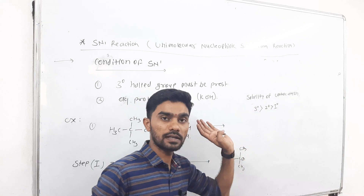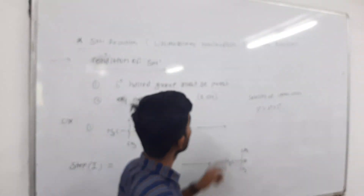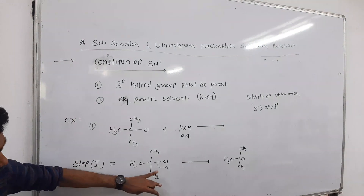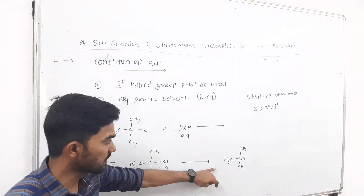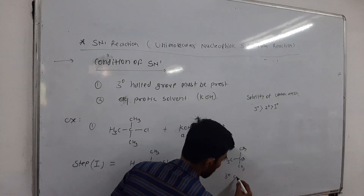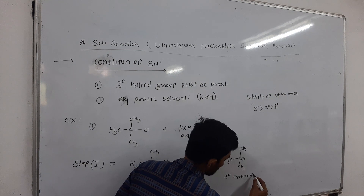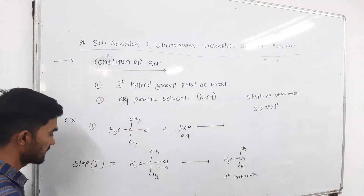The tertiary carbocation gives the product of the SN1 reaction. The first step involves the leaving group removal and formation of the tertiary carbocation, which is the more stable carbocation. Then the second step follows.